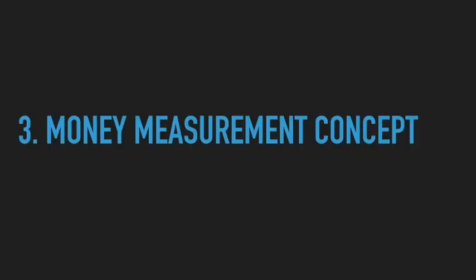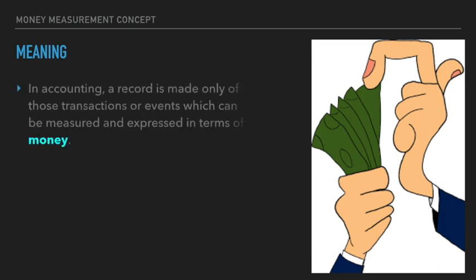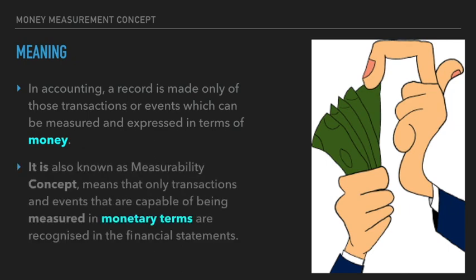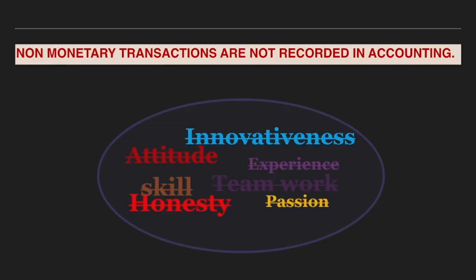The third concept is the money measurement concept. We focus on the word money, which means monetary transactions. In this concept, only those transactions are recorded which are expressed in the form of money — financial and monetary transactions are recorded. We do not record non-monetary and qualitative transactions. For example, if someone is very skillful, experienced, or works with teamwork, that will not be recorded because it is not in monetary form.